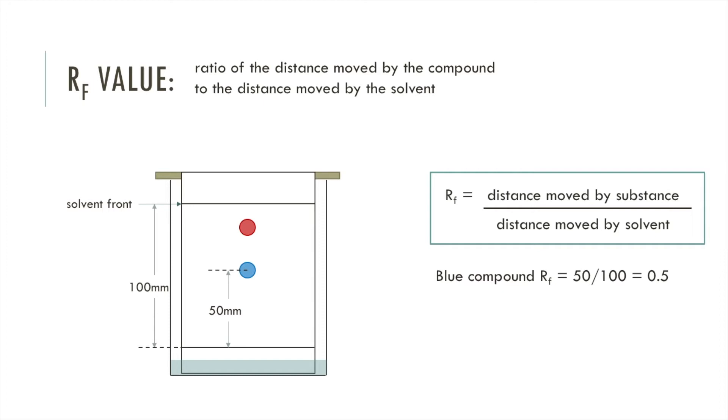To calculate the RF of the red compound you do the same thing. So measure the distance from the center of the spot to the starting point and let's say that's 80 millimeters. Then the RF for the red compound would be 80 divided by 100 which is 0.8. RF values are higher for substances that are more soluble in the solvent.